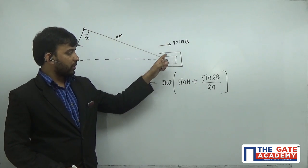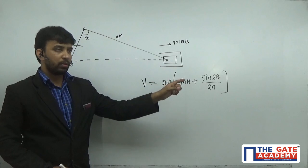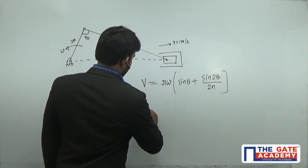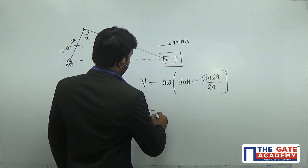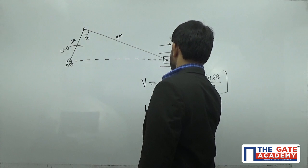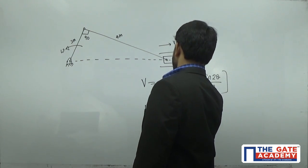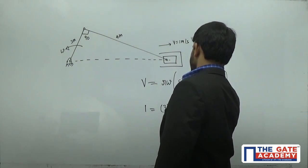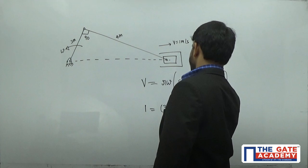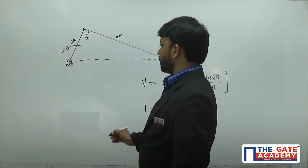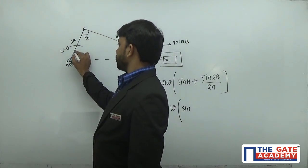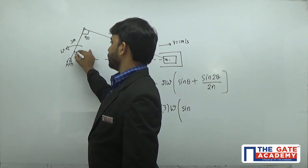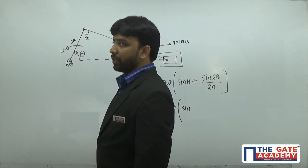Since slider velocity is given, I wrote the velocity formula for the slider. Velocity of the slider is 1 meter per second, radius of the crank is 3 meters, and I need to find the angular velocity of the crank. The expression involves sin θ + sin 2θ / n. Here, θ is the angle made by the crank from the inner dead center.